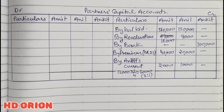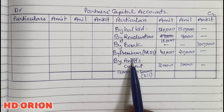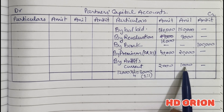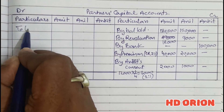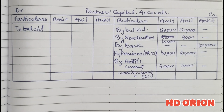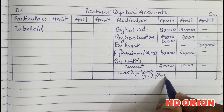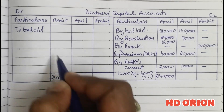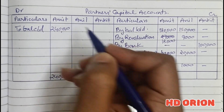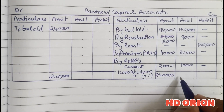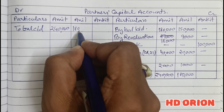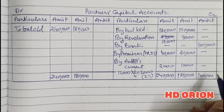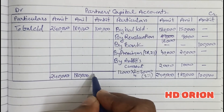We cannot debit the general reserve because that would eliminate it from the books. The new partner is the gainer and the old partners are the sacrificers, so the gainer transfers money to the sacrificers. Now balancing the figures and closing the accounts: the grand total for Amit is rupees 2,40,000, for Anil it is rupees 1,80,000, and for Ankit it is rupees 1,00,000.